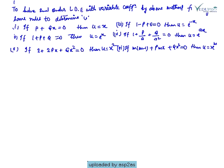To summarize the method for second order LDE with variable coefficients, here are the rules to determine u: if P + Qx = 0, then u = x; if 1 + P + Q = 0, then u = eˣ; if 1 − P + Q = 0, then u = e^(−x); and if 1 + P/a + Q/a² = 0, then u = e^(ax). These six rules tell us what u to suppose depending on the form of the equation.